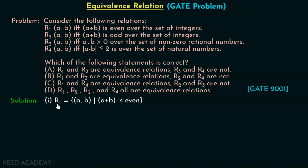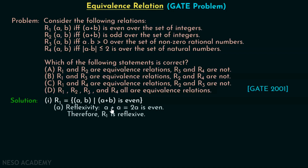For R1, we will check three properties: reflexive, symmetric, and transitive. If all three are satisfied, R1 is an equivalence relation. For reflexivity, (a, a) must belong to R1, meaning a plus a must be even. We know that a plus a equals 2a, and 2a is always even. Therefore, R1 is reflexive.